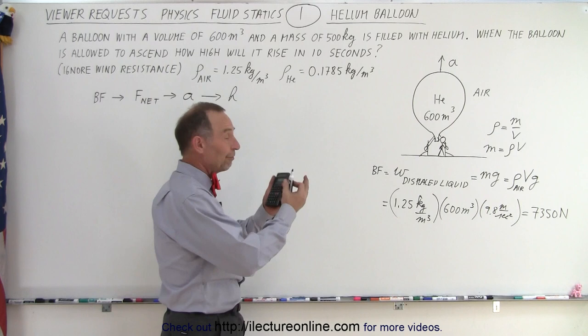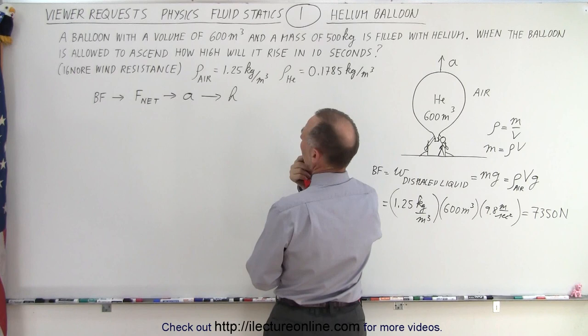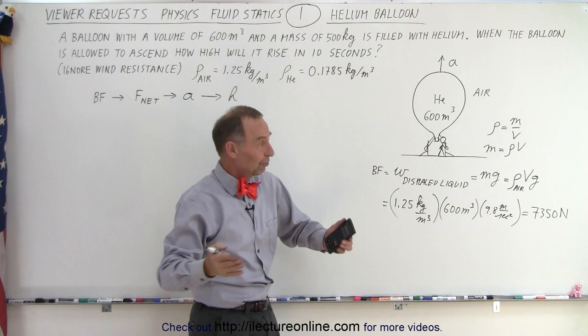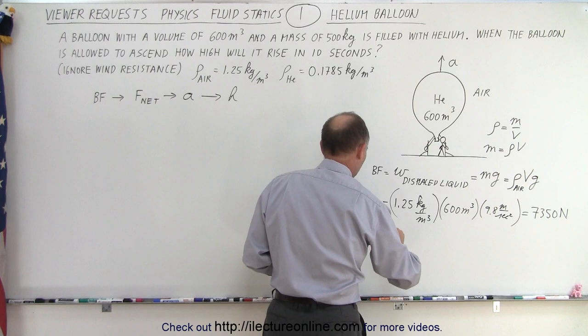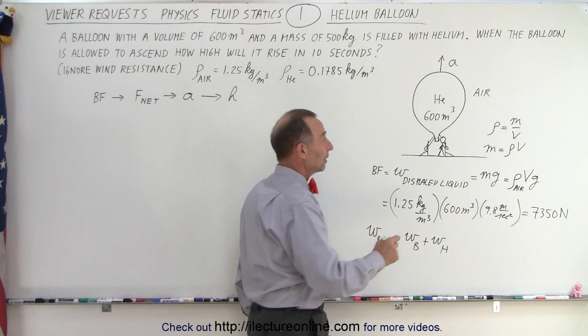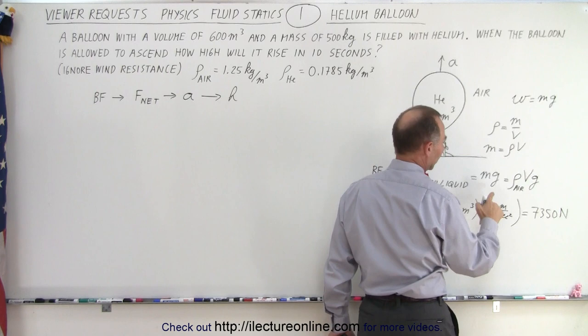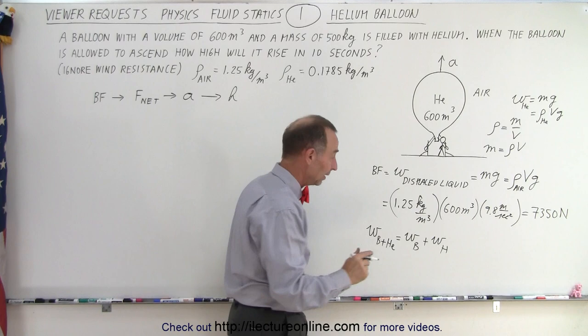Now to find the net force, it will be the buoyancy force minus the weight. Was the mass of the helium included in the 500 kilograms? Doesn't really matter — either it's included or it's not. We're going to assume it's not included; you can make it zero if it was. So the weight of the balloon plus the helium equals the weight of the balloon plus the weight of the helium. The weight equals mass times g, and for the helium, mass equals density times volume, so the weight of helium equals density times volume times g.